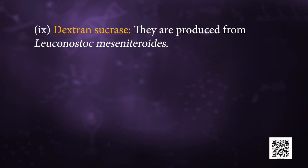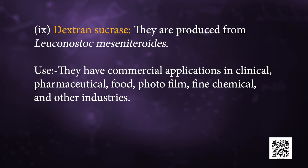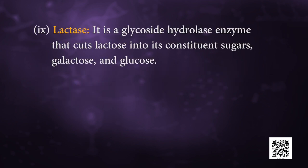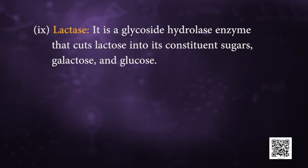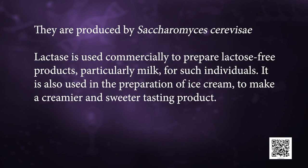Next is dextran sucrase. They are produced from Leuconostoc mesenteroides. They are used in commercial applications in clinical, pharmaceutical, food, photo film, fine chemical, and other industries. Next is lactase. It is a glycosidic hydrolase enzyme that cuts lactose into constituent sugars, that is galactose and glucose. They are produced from Saccharomyces cerevisiae. Lactase is used commercially to prepare lactose-free products, particularly milk, for lactose-intolerant individuals. It is also used in the preparation of ice cream to make creamier and sweeter tasting products.